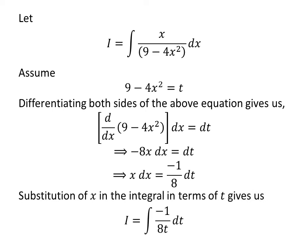In the integral I, let us substitute 9 minus 4x squared by our assumed value t, and x dx by minus 1 upon 8 dt. So I equals the integral of minus 1 upon 8t with respect to t.